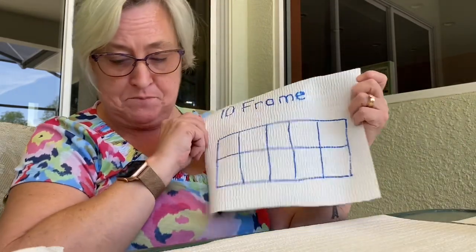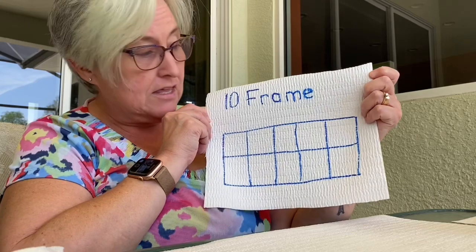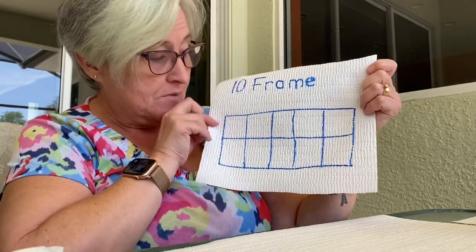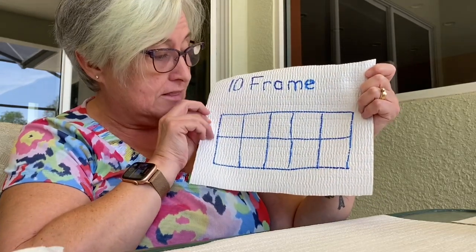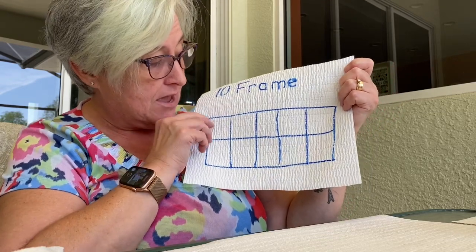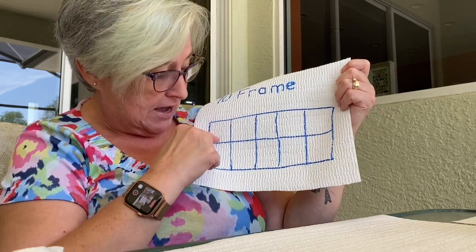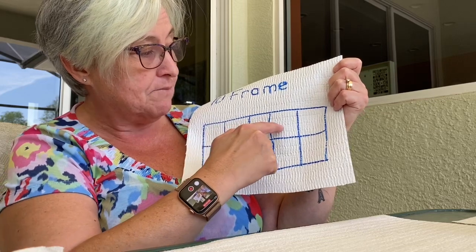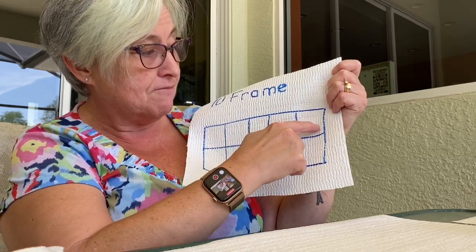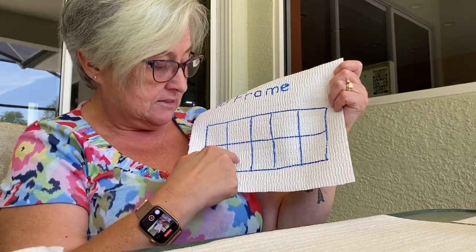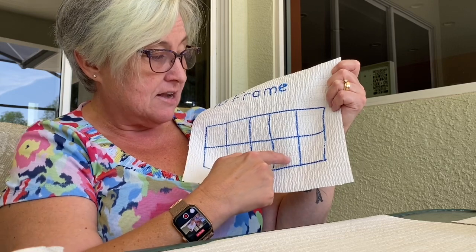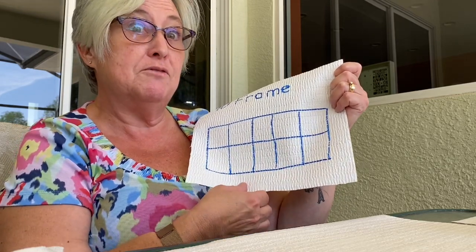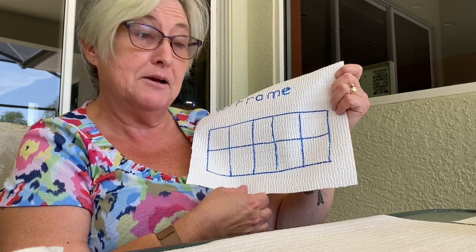Do you remember my 10 frame? We looked at this the other day — we made it together. I have one large rectangle, and then I have five squares on top: one, two, three, four, five, six, seven, eight, nine, ten squares in total. Five on top, five on the bottom.